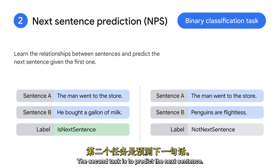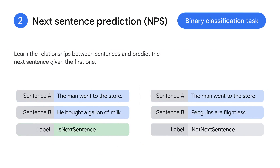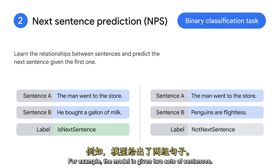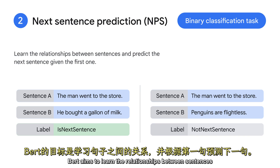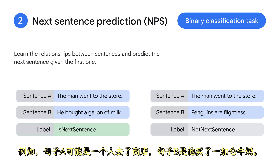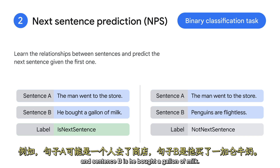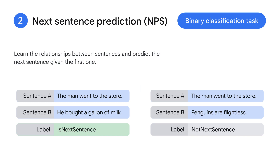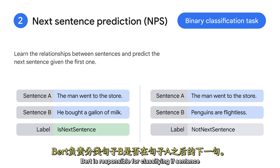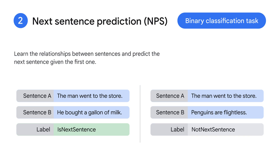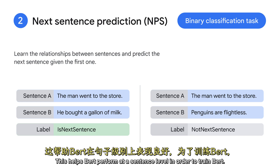The second task is to predict the next sentence. The model is given two sets of sentences, and BERT aims to learn the relationships between sentences and predict the next sentence given the first one. For example, sentence A could be 'a man went to the store,' and sentence B is 'he bought a gallon of milk.' BERT is responsible for classifying if sentence B is the next sentence after sentence A. This is a binary classification task, and it helps BERT perform at a sentence level.